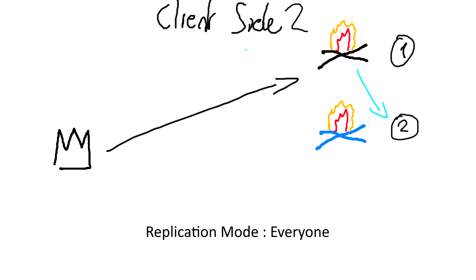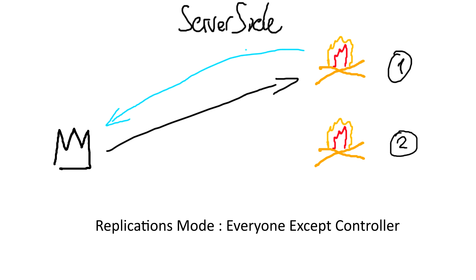Controllers are not able to modify this value because they are not the owner — they simply wait for the update from the owner and cannot modify it themselves. Now let's go to replication mode 'everyone except controller'. On the server side, if we modify the value as the owner we receive the callback. But on client side one, we don't receive anything because we are the controller — the exception.